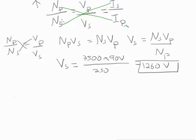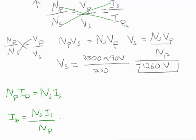N_P, I_P, N_S, I_S. And to solve for our primary current, N_S times I_S divided by N_P. 3,500 turns times 2 amps divided by 250 turns. We get that the current in the primary circuit is 28 amps.